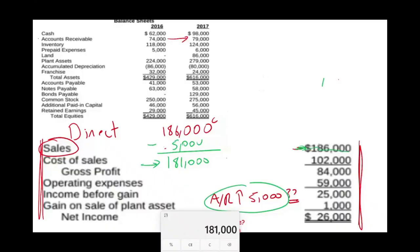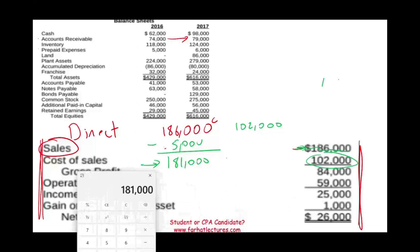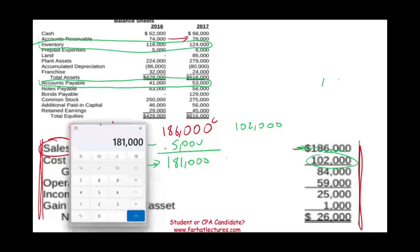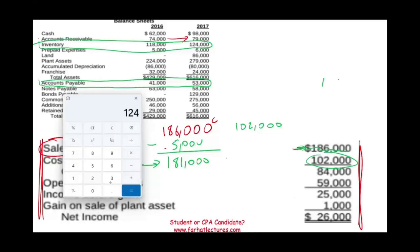I'm done with sales. I will move on to cost of sales: 102,000. What accounts on the balance sheet influence cost of sales? Two things influence cost of sales: accounts payable, when I buy stuff on account, and inventory, because inventory turns into cost of goods sold. I have to analyze their effect on my cost of sales. Let's look at inventory first. Inventory went from 118 to 124. Taking 124 minus 118, my inventory went up by 6,000.